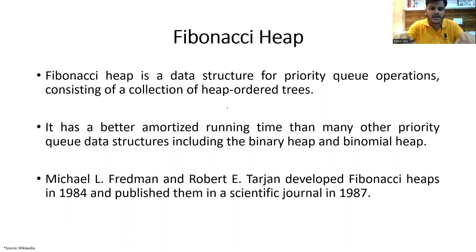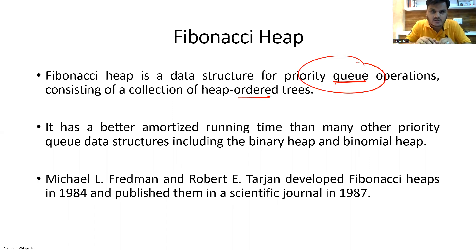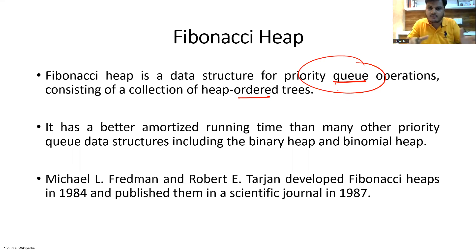We are going to learn what is Fibonacci heap, what are the time complexities of performing several operations on Fibonacci heap, and what are the basic structure and its applications. Fibonacci heap is an advanced data structure basically used for priority queue operations, consisting of a collection of heap-ordered trees. Priority queue is a data structure like a stack or queue, but here the data elements are associated with some priorities, and on the basis of their priorities, the operations are served.